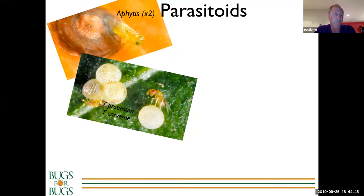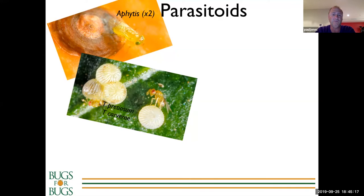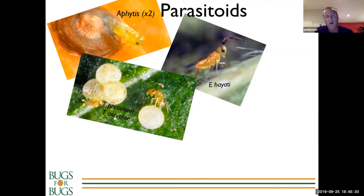The other Trichogramma species we're using is carverae, which is quite effective on light brown apple moth and codling moth. Pretiosum is also useful for diamondback moth control, as some districts are having severe issues there. Eretmocerus hayati - very successful for silverleaf whitefly control - was brought in around 10-15 years ago by CSIRO from the USA, originating from Afghanistan. It's a great parasite for silverleaf whitefly, which decimated horticulture.